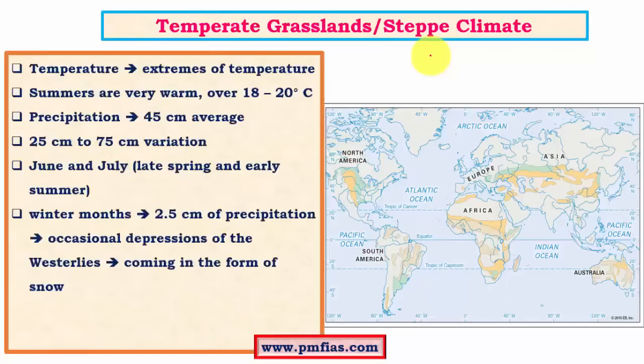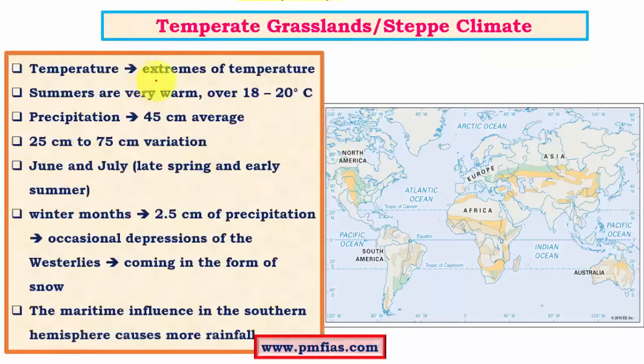Coming to the climate of steppe regions: temperatures are usually extreme. The annual range is very high because summers are warm and winters are very cold, sometimes even below freezing. Regarding diurnal range, in summer the days are very hot while nights are cold, giving a high diurnal range. In winter, both days and nights are very cold, resulting in a very low diurnal range. Diurnal range refers to the daily temperature range.